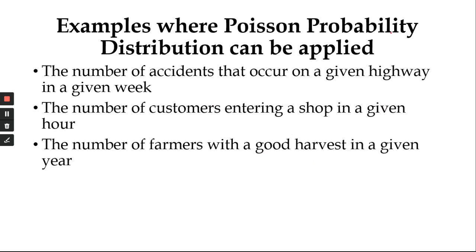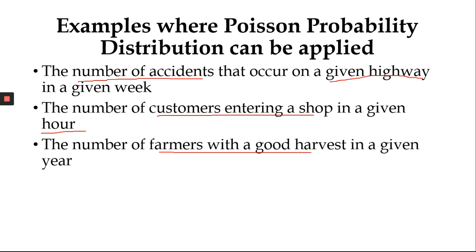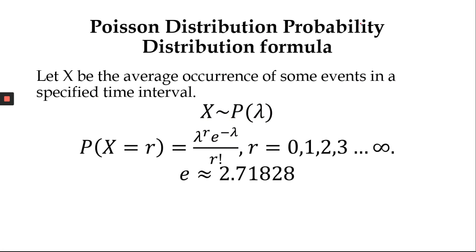Examples where Poisson probability distribution can be applied: the number of accidents on a given highway, the number of customers entering a shop in a given hour or minute, and the number of farmers with a good harvest in a given year. The Poisson probability distribution formula is used to generate probabilities. Let X be the average occurrence of some events in a specified time interval; then X follows Poisson with parameter Lambda.